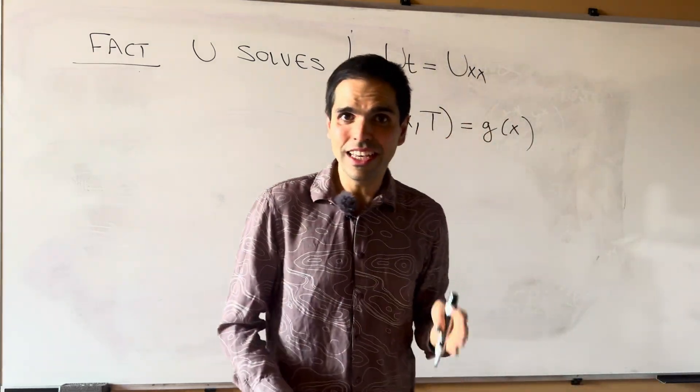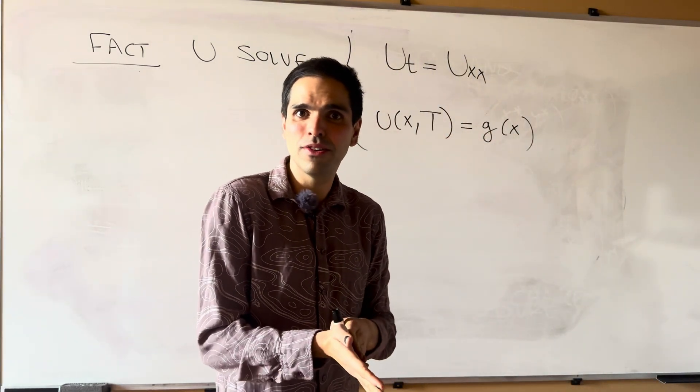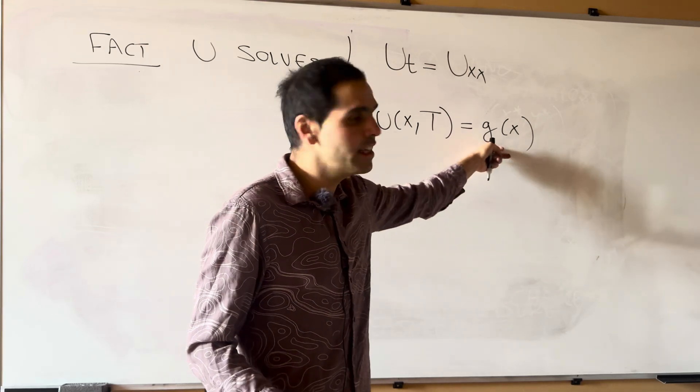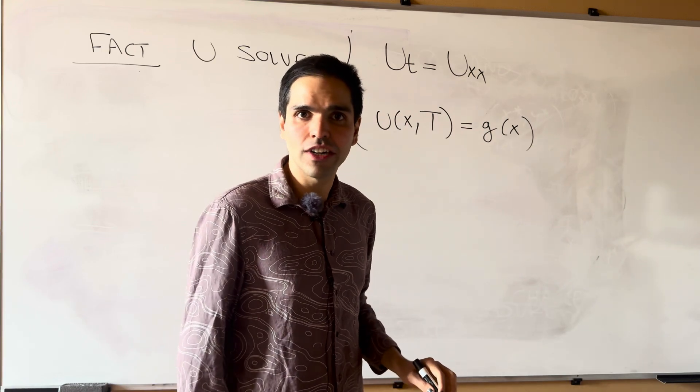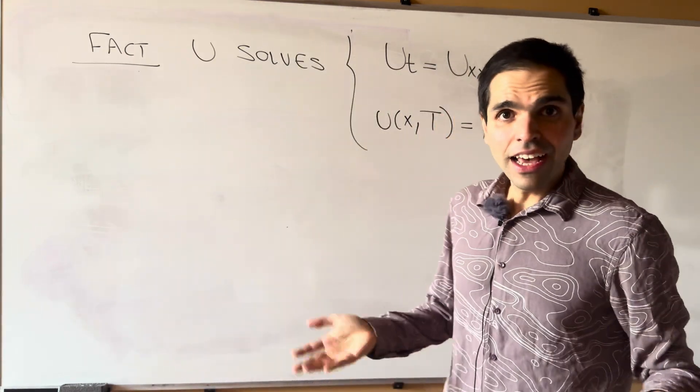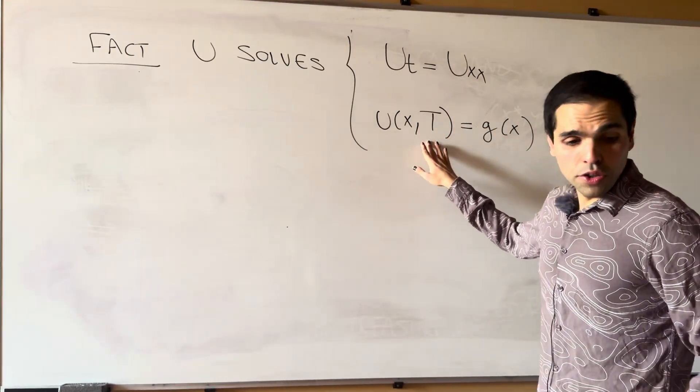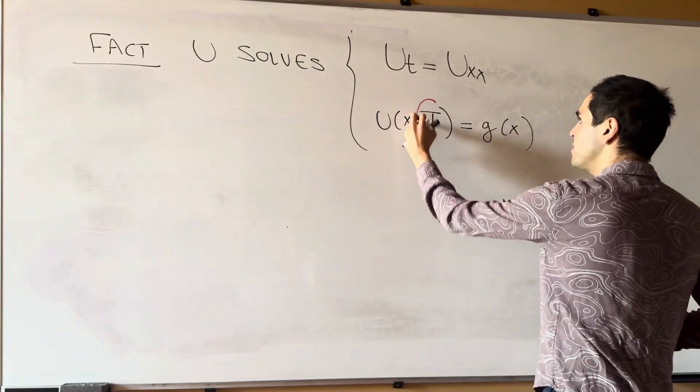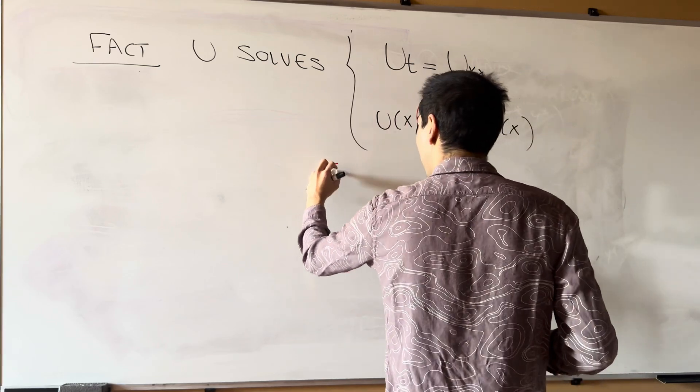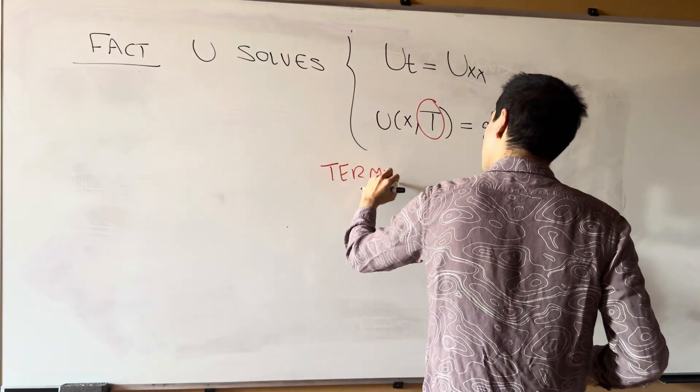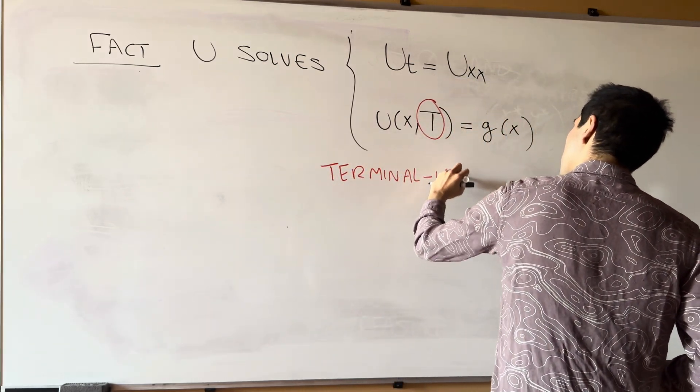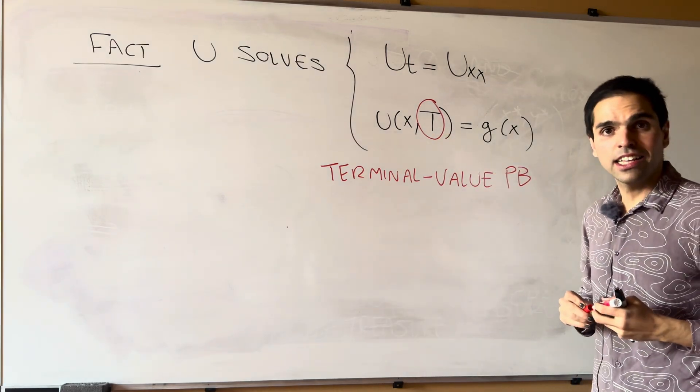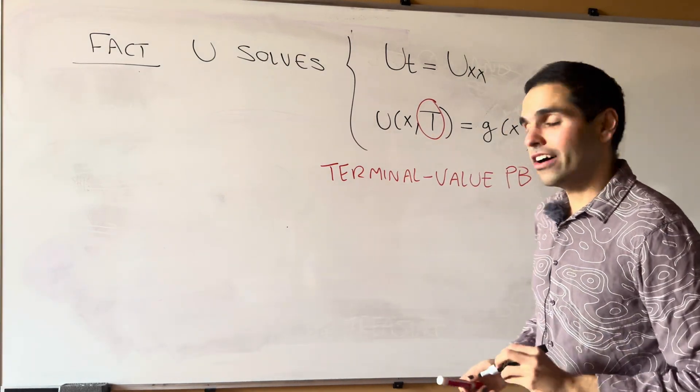And that's because if you start at the time capital T, you don't move at all because you already need to stop. And so, the gain is really wherever you started at. And this is very interesting because usually we're dealing with initial value problems. But this is something called a terminal value problem.